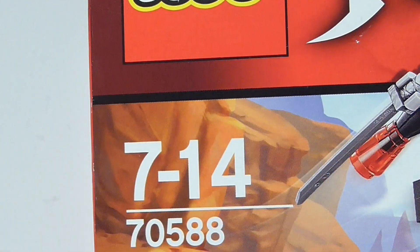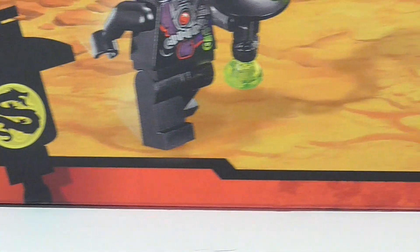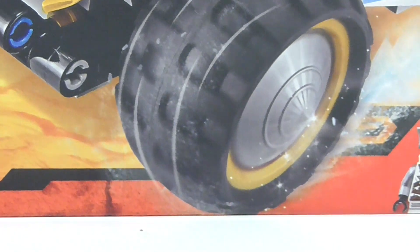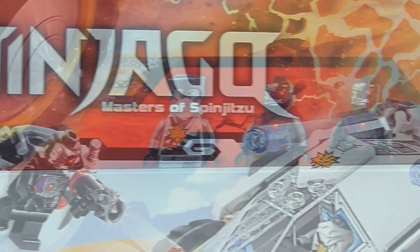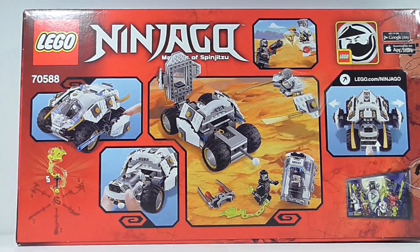This time as you can see it's on set 70588, this is the Titanium Ninja Tumbler. On the front there we can see Yang's Lantern of course, and then we've also got two Nindroids and of course Zane. And then we also have got Cole across the top, and then we've got the Tumbler fighting off against the Nindroids.